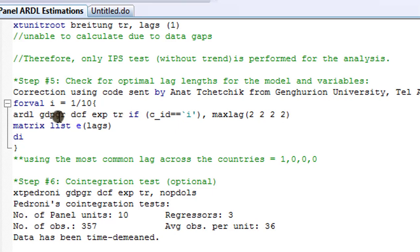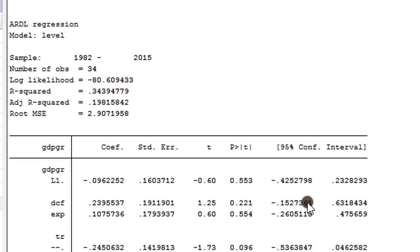To perform the optimal lag, here's the code. The variables are GDP growth rate, DCF, expenditure, and trade. The CID is a country ID and I'm using a maximum lag of two. You can also use a maximum lag of one if you don't want to lose too many degrees of freedom. Stata default lag is BIC, but if you want the AIC information criterion, type AIC here. I'll prefer the BIC so I'm sticking with the default lag.